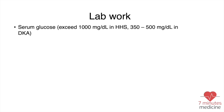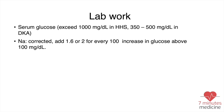For lab work, serum glucose may exceed 1,000 in HHS, while in DKA it tends to be less than 300. For sodium, calculate the corrected sodium by adding 1.6 mEq/L for every 100 mg/dL increase in glucose above 100 mg/dL. The anion gap is important to calculate: sodium minus chloride minus bicarbonate.